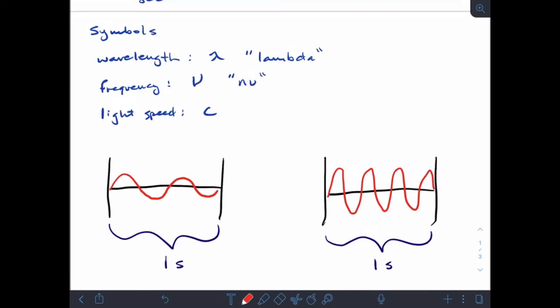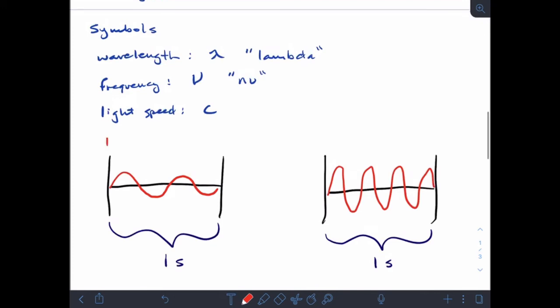You can see how a longer wavelength—so a long lambda—you get fewer wavelengths per second, so a long wavelength means small frequency. But if I have a short wavelength, I get more waves in the same amount of time, so I get high frequency.